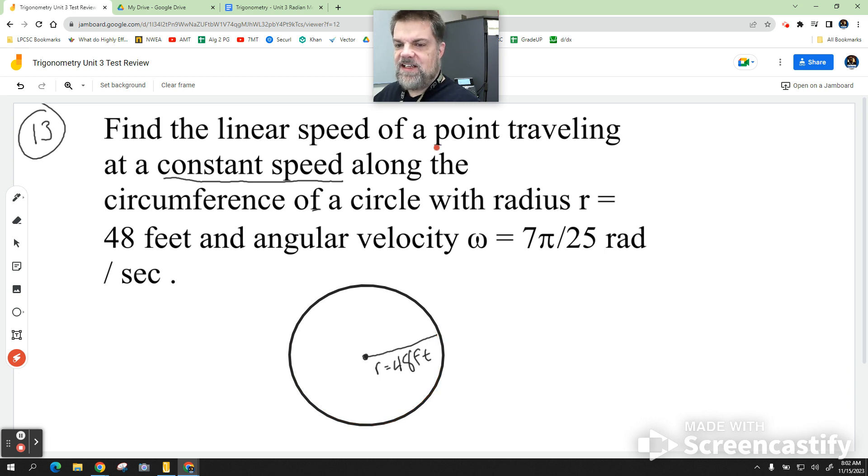And they also told us that the angular velocity was 7 pi over 25 radians per second. And we need to calculate, let's just find the linear speed. So, I know I explained this in class, but it is possible you don't remember this off the top of your head. But there is a relationship between linear speed and angular speed.